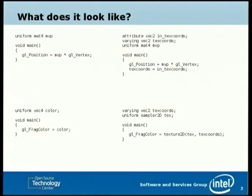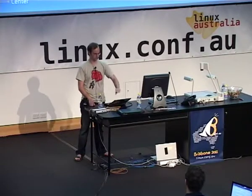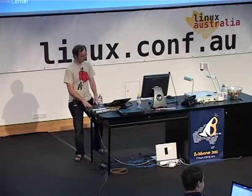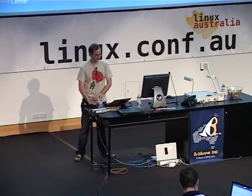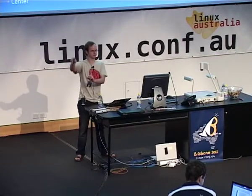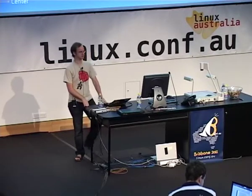Here are some very simple programs — the sorts of things our compiler used to be good at. At the top left we have a 4x4 model-view-projection matrix that you multiply by the vertex position to get position in clip space. At the bottom is a fragment shader that just assigns a constant color. On the right-hand side we extend that a little bit, adding texture coordinates. The vertex portion passes through the texture coordinates as a two-component vector, and the fragment shader looks those up in a rectangle texture and sets that as the color. These are all very simple — the sorts of things we handled well before.